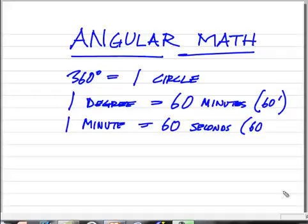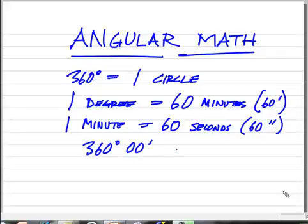We indicate seconds with a double apostrophe or a quote. So we could say that a full circle is 360 degrees, 0 minutes, and 0 seconds, right?